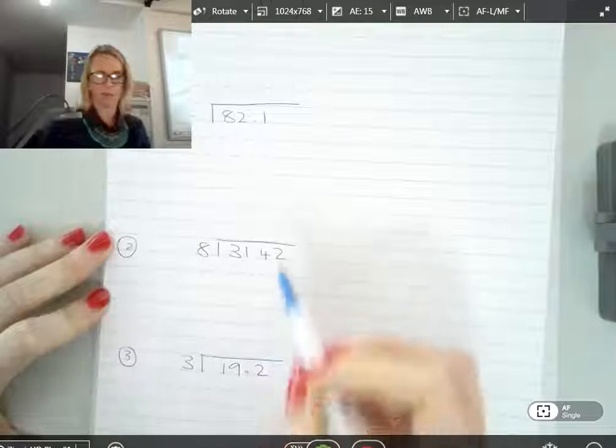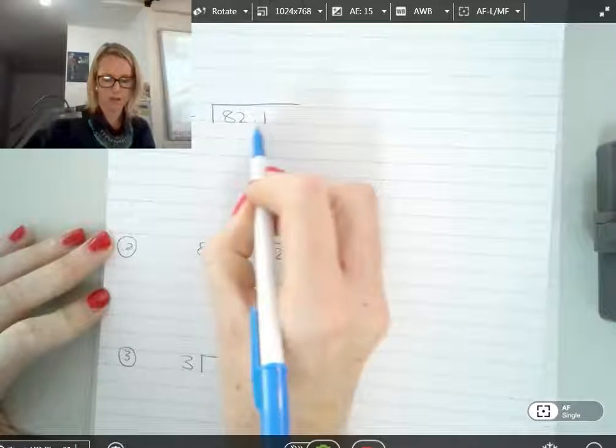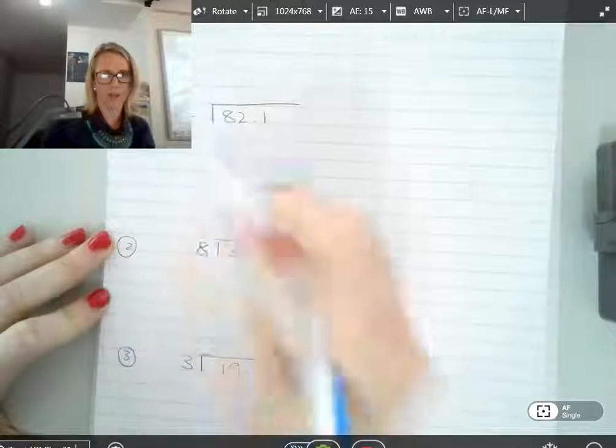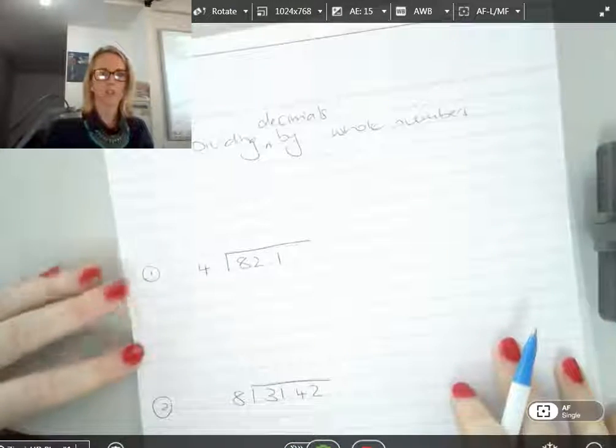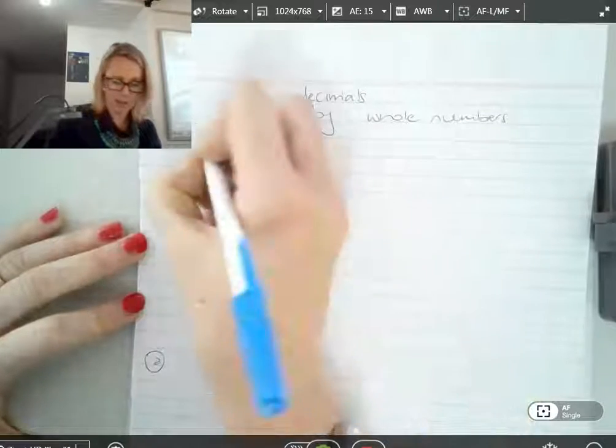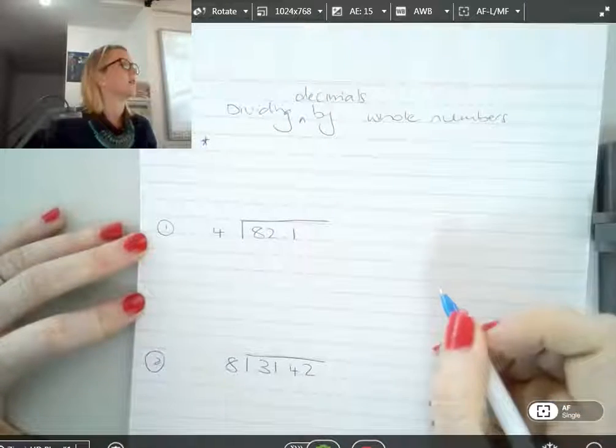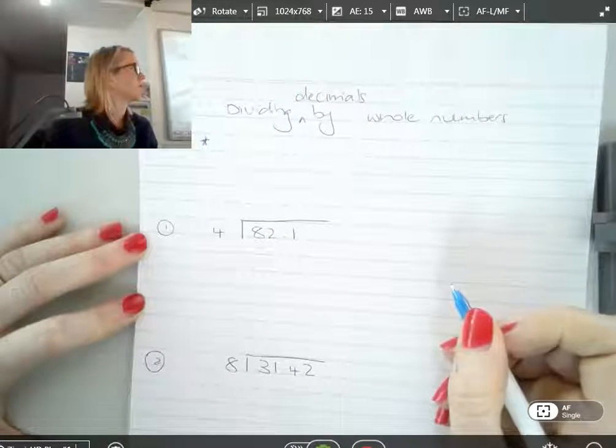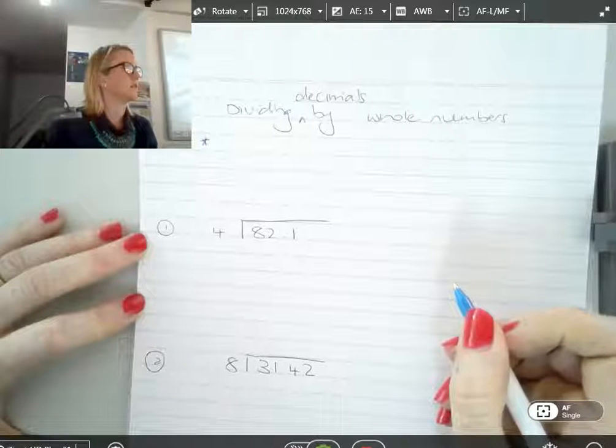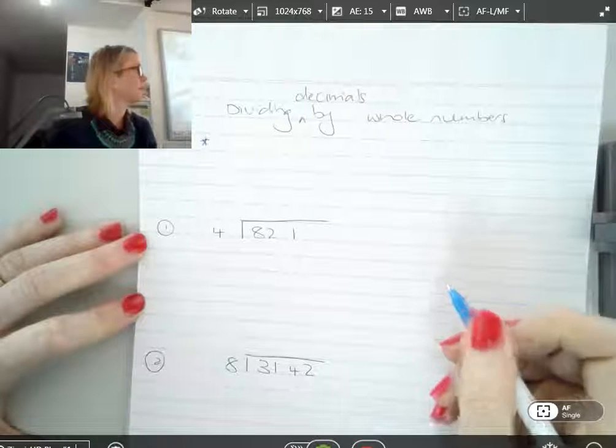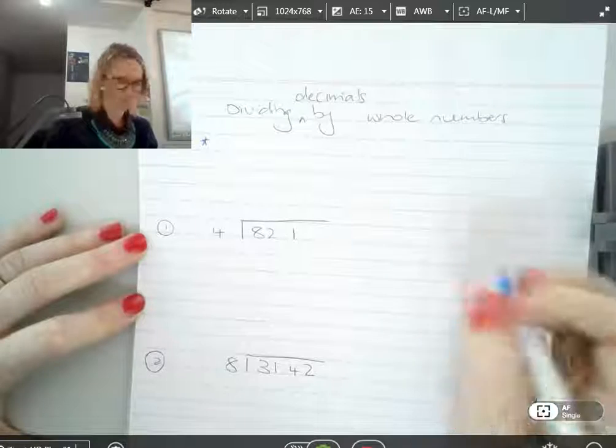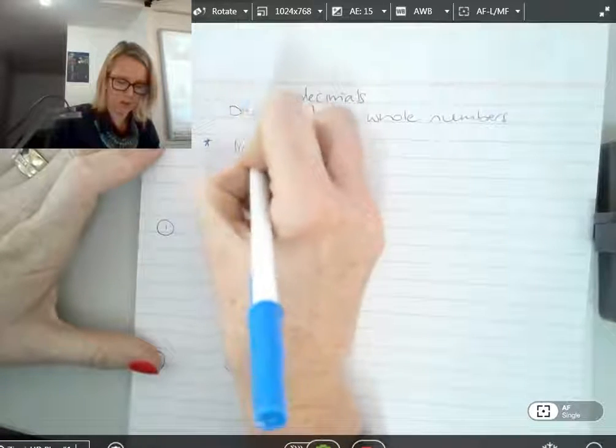Excellent. Notice that when you say it, you say the number that you're dividing into and then dividing by is out the front. So just what I've written on the board there is the key step you need to remember. So who can tell me what that is? Alex, yep. Excellent. You have to line up the decimals.